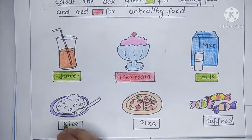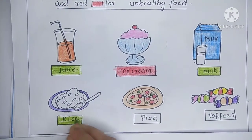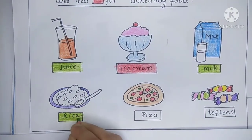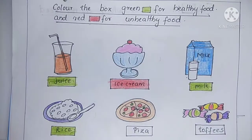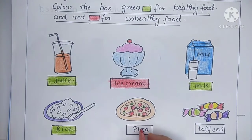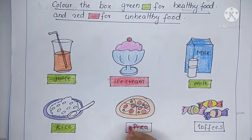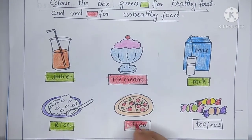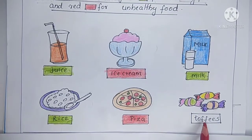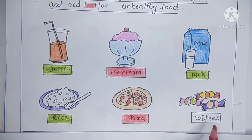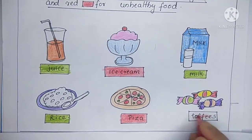Rice — healthy food. Pizza — unhealthy food. Toffee — unhealthy food.